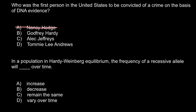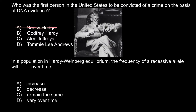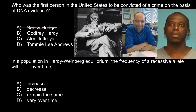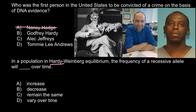Now we have three names left, and here are three pictures — this is the first picture, this is the second, and this is the third. Two of these people would be scientists and one would be a serial rapist. We have the name Godfrey Hardy, and actually our second question relates to him — in a population in Hardy-Weinberg equilibrium, the frequency of the recessive allele...